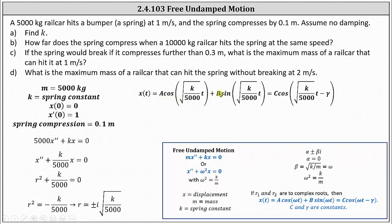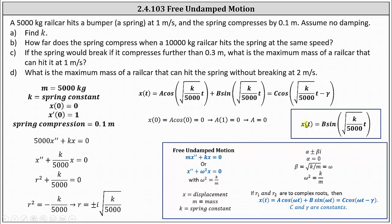We need to determine A and B using the initial value problem, using the general solution written as a sum. Applying x(0) = 0: substituting t = 0, cosine(0) = 1 and sine(0) = 0, giving A·cos(0) = 0, so A = 0. The solution reduces to x(t) = B·sin(√(k/5,000)·t).